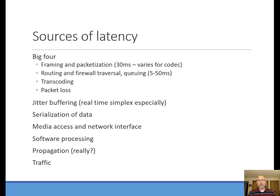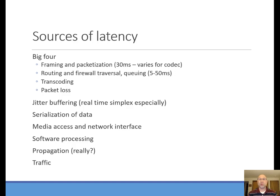Let's get more specific about sources of latency. The big ones are framing and packetization — that whole encapsulation process. Once the packet starts traversing the network, there are more sources of delay. At a switch, it has to process its source address table and perform error checking. At a router, processing goes all the way up to layer three, and if there's network address translation, access control lists, or firewalling, all of those slow things way down. Transcoding is a voice problem where you start with one codec and end with another. Packet loss is another real problem.